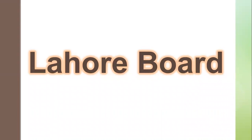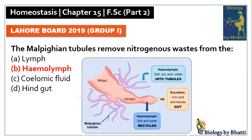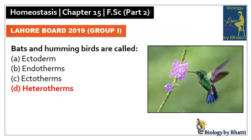First of all, Lahore Board MCQs. Lahore Board 2019 Group 1: the Malpighian tubules remove nitrogenous waste from the hemolymph, so the answer was B option. In this paper, bats and hummingbirds are called heterotherms, so the answer was D option.